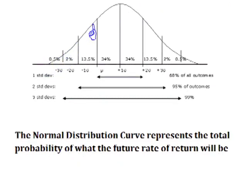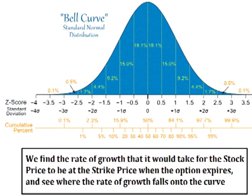The total area under a normal distribution curve represents all probability of an event occurring. In asset modeling, the normal distribution curve is a graph that represents the total probability of what the future rate of return will be. We can use this to find the probability that the stock price will be above or below a certain level by a certain date in the future — for instance, the probability that the price of a stock will be above the strike price of an option on the day the option expires. We find the rate of growth it would take for the current stock price to be at the strike price at expiration and see where that rate of growth falls onto the normal distribution graph.